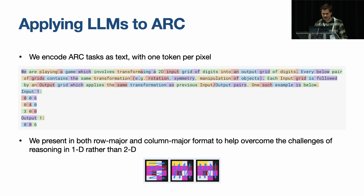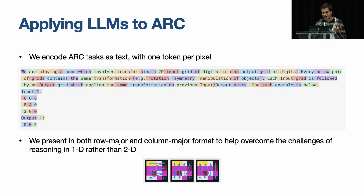What about large language models? LLMs have pretty good emergent reasoning abilities on text — can we transfer that to logic puzzles? LLMs obviously can't handle ARC grids natively. We could try visual language models, but there's a question of how to get them to output a pixel-perfect grid. What we did is convert each task with one token per pixel and fed that into various LLMs, asking them to complete the final output. Since LLMs do reasoning in one dimension and many ARC tasks require reasoning in two dimensions, we provide each task three times in a rotated and transposed way, which dramatically improves performance.